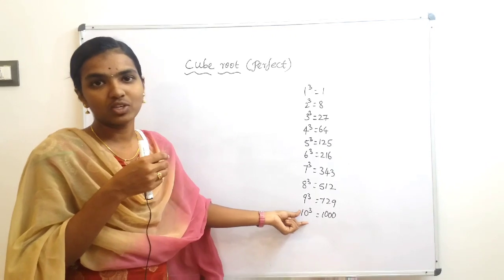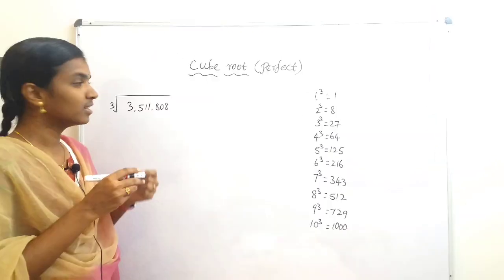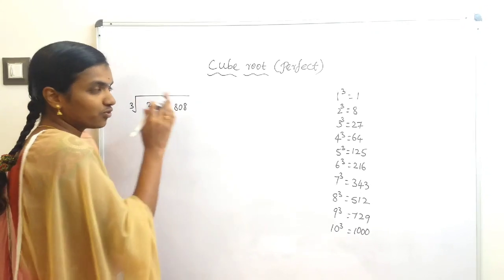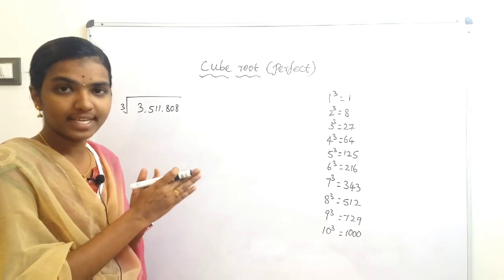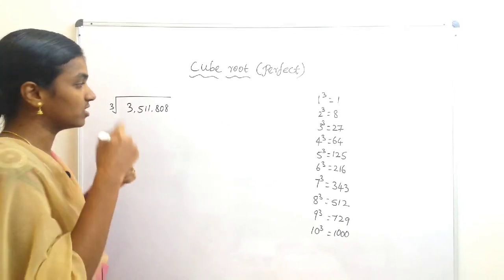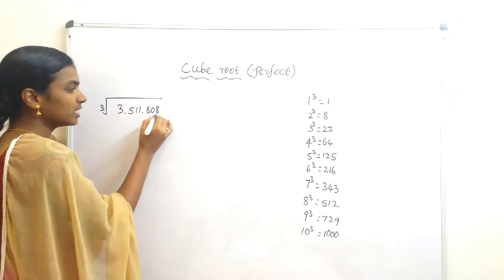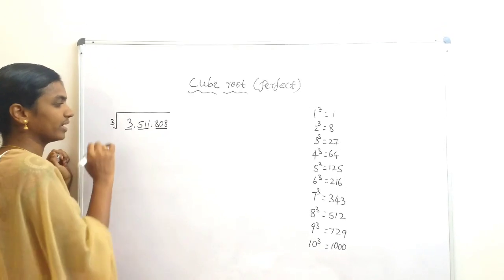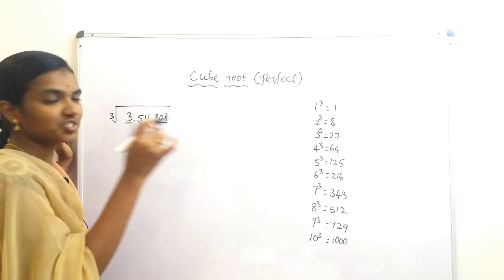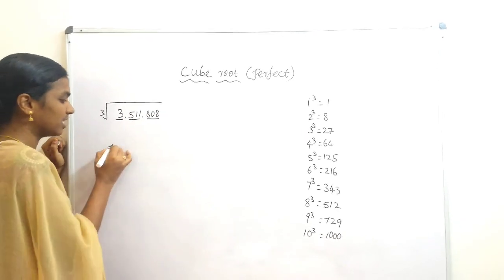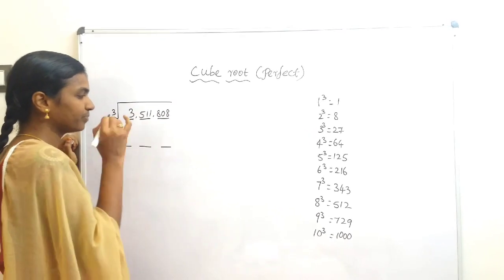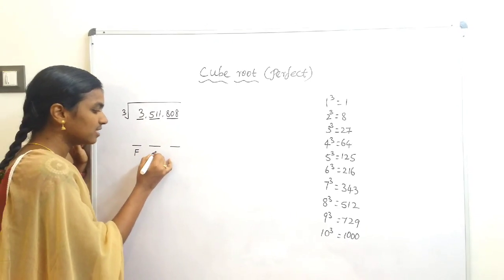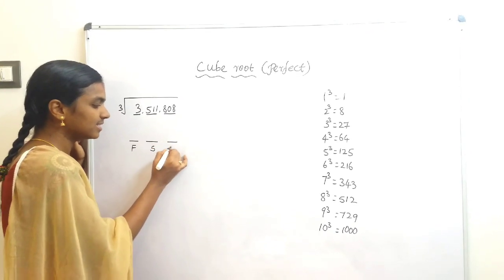Let us start the first question: cube root of 3,511,808. The first step is to split from right to left in groups of three digits: 3 | 511 | 808. We get three parts, so our answer will be a three-digit number. We will find the first digit, second digit, and last digit.